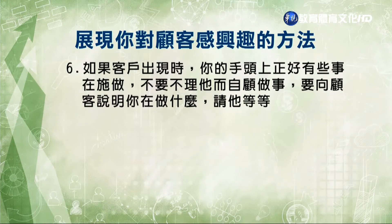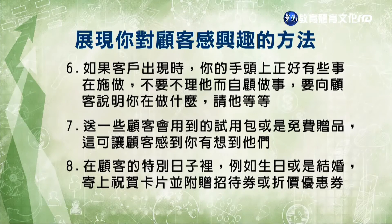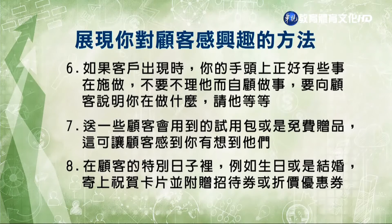比方說新產品發表或公司促銷活動，詢問他們是否要進行產品訂購。如果客戶出現時你手頭有事情在做，不要不理他，要向客戶說明自己在做什麼，請他等一等。雖然談話可能降低工作速度，但可以讓客戶認為他們非常重要。另外可以送顧客試用包或免費贈品，讓顧客感覺你有在想到他們。第八點是在顧客的特別日子，比方說生日或結婚紀念日，可以寄上祝賀卡片並附贈招待券，讓他們夫妻都可以參加相關活動。